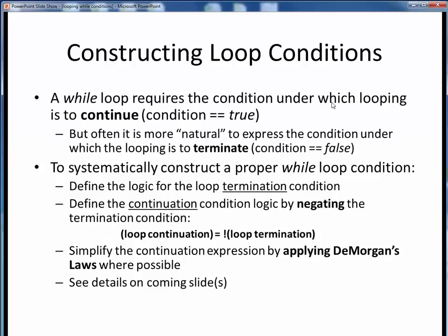A while loop requires a loop continuation condition, which expresses the conditions under which looping continues as long as the condition remains true. But in designing our code, it's often simpler and more natural to express our looping in terms of the specific case under which the looping will terminate, or the false case. Here's a systematic way of properly setting up the needed while loop continuation condition. First, come up with a logical expression for the loop termination condition.